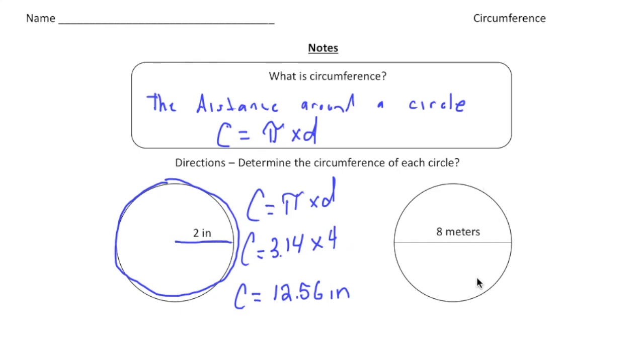The second one, we have another circle. And this time, they give us the diameter. So again, always write down the formula. Circumference is pi times d. And circumference is going to be 3.14 times our diameter. And this time, we know the diameter is 8. So let's plug in an 8.